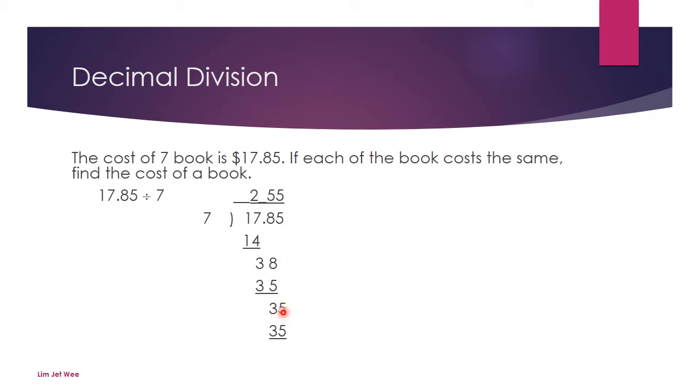And of course, 5 times 7, you get 35, and you have no more remainder. So what we did is we just divided as per normal. I didn't even bother about this